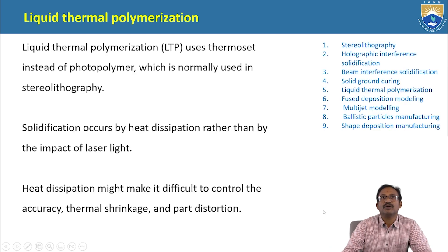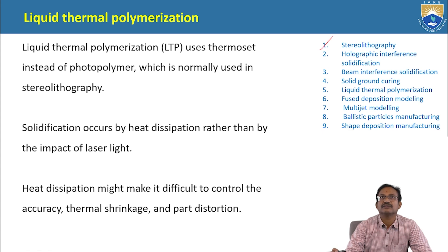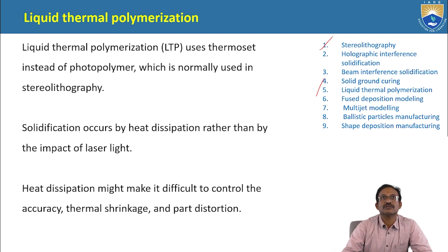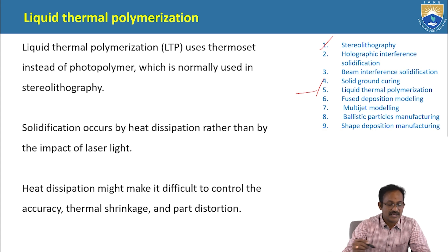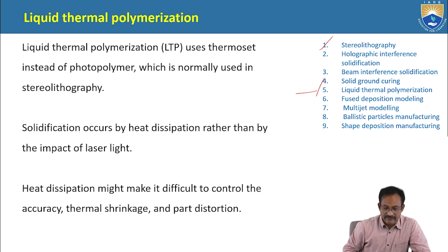Liquid Thermal Polymerization uses melt instead of photopolymer, which is normally used in stereolithography. Solidification occurs by heat dissipation rather than by the impact of laser light. Heat dissipation might make it difficult to control accuracy, thermal shrinkage, and bath distortion. This is about liquid thermal polymerization.